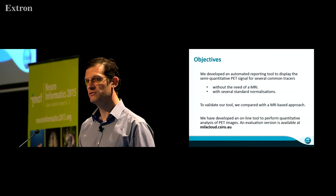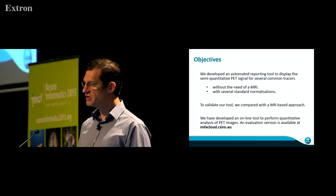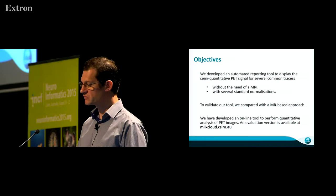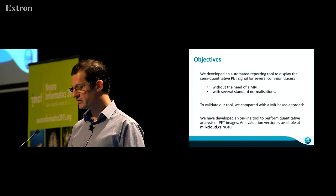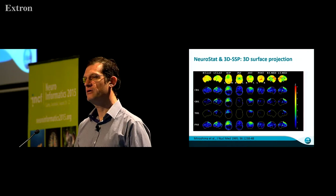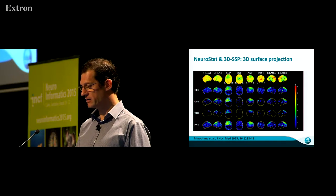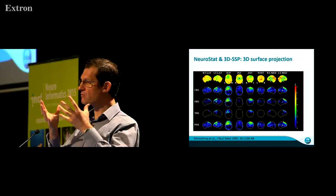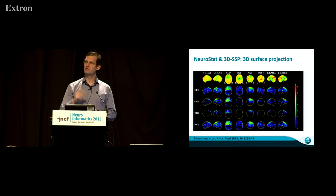The objective of our project was to develop a similar technique without requiring an MRI. The normalization reference region varies between tracers, so we also wanted something robust to that. The tool is available at mixcloud.cso.eu. One very popular software for analyzing PET images has been Neurostat, developed by Professor Minoshima in Japan. It works by taking the surface of the brain — a rough convex hull — and sampling perpendicular to the surface, taking the maximum or average of the first pixels going inward.